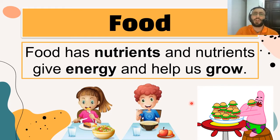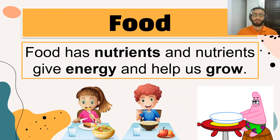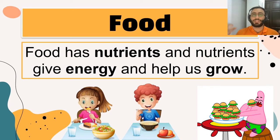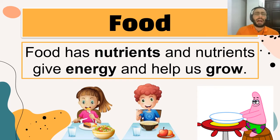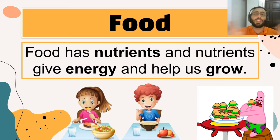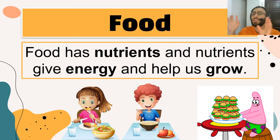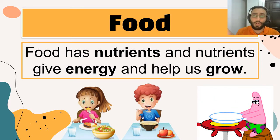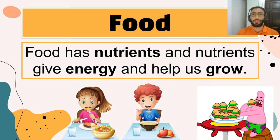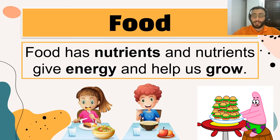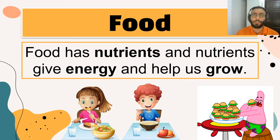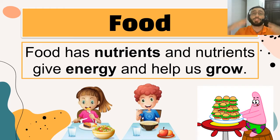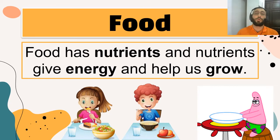Remember, you have to eat healthy things. If you eat unhealthy things like fried chicken all the time, it doesn't give you many nutrients, so you won't get much energy and you won't grow much. Also, if you don't eat vegetables, fruits, or meat at all, that's bad for you. You need to eat enough for your body to get energy. If you eat too little, you will not have energy and you will not grow. Food is very important.